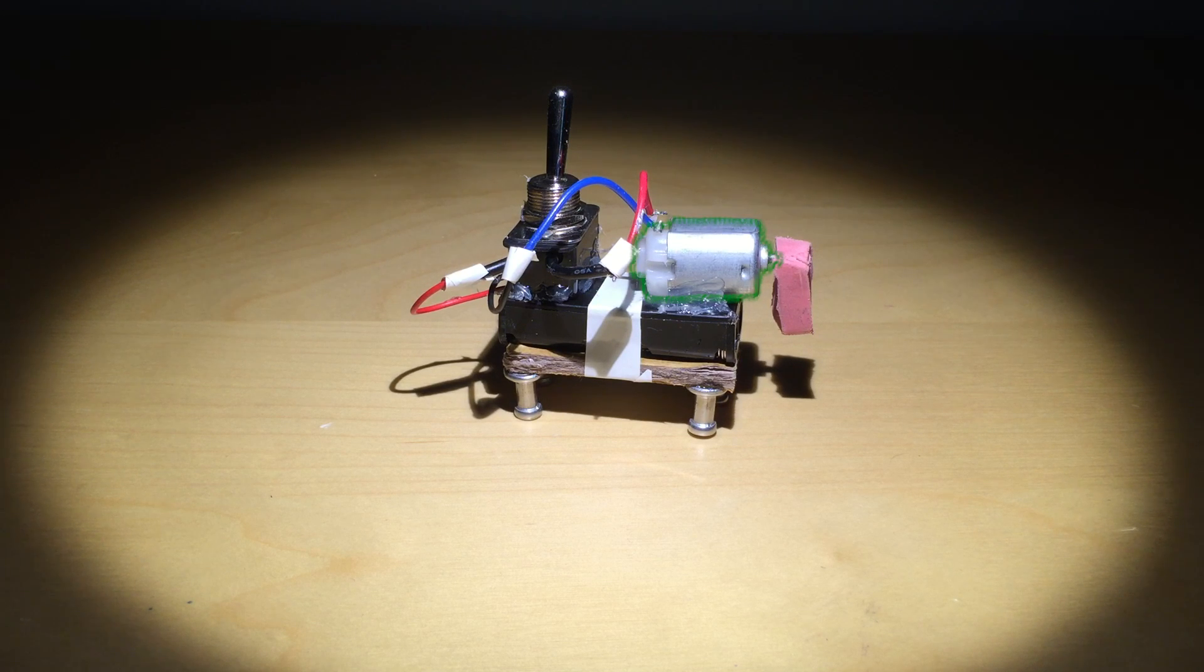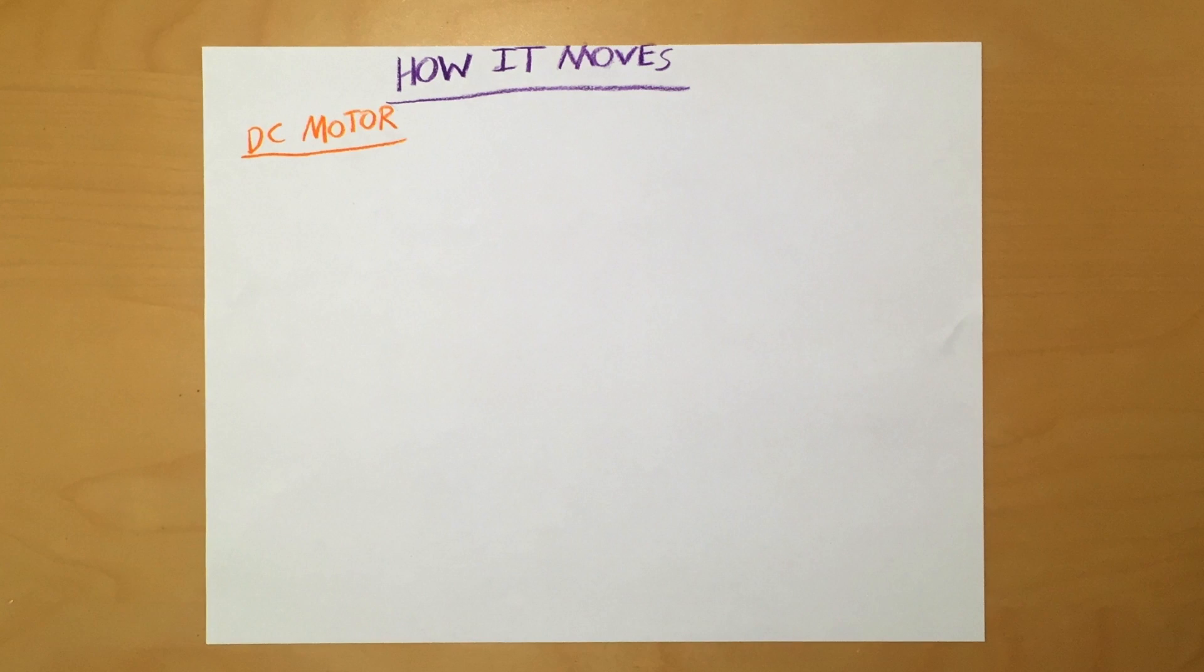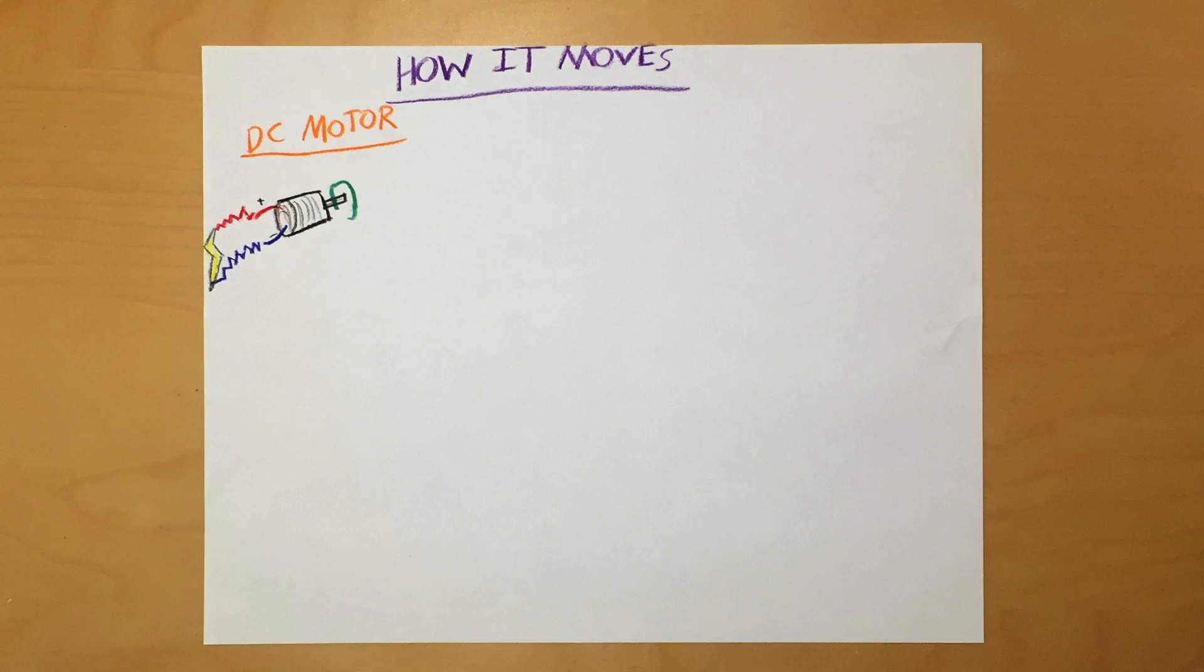It moves randomly using a DC motor and an imbalanced weight. DC motors spin when an electric current passes through them.